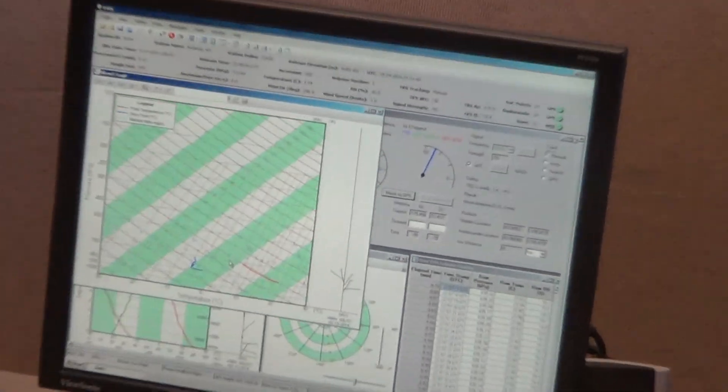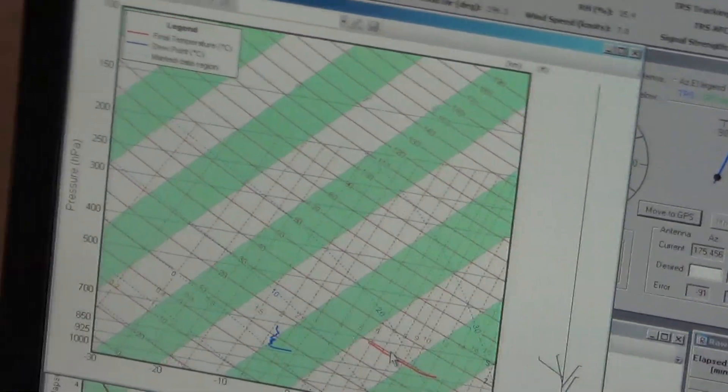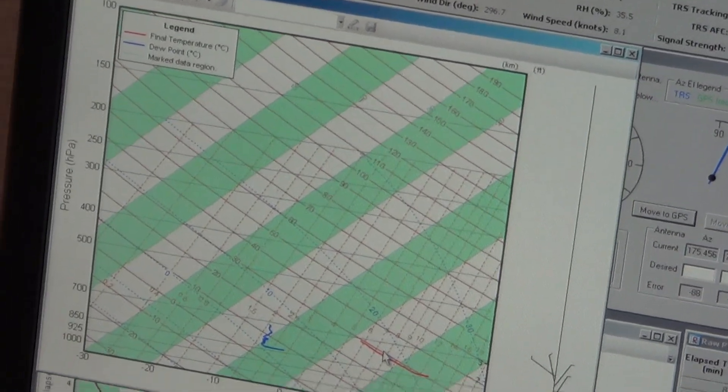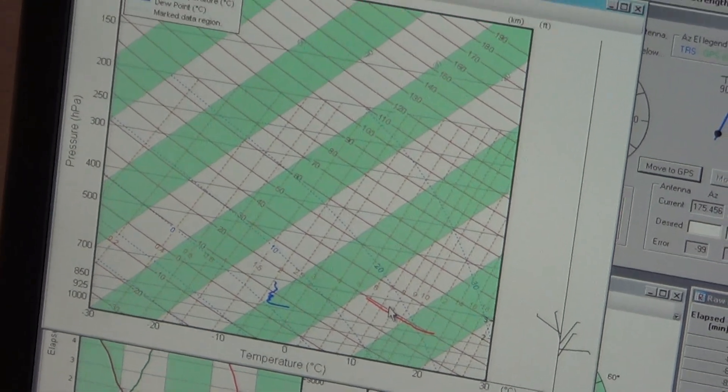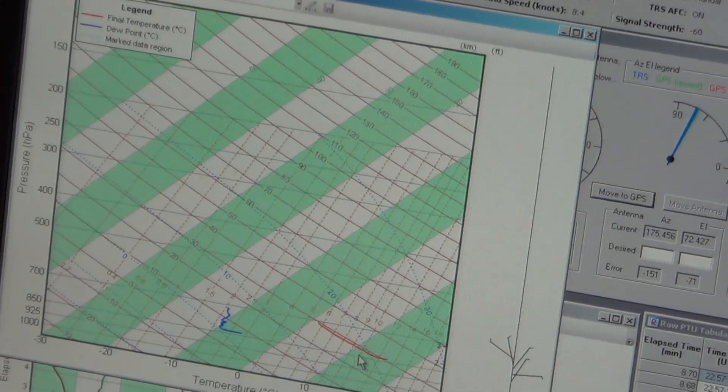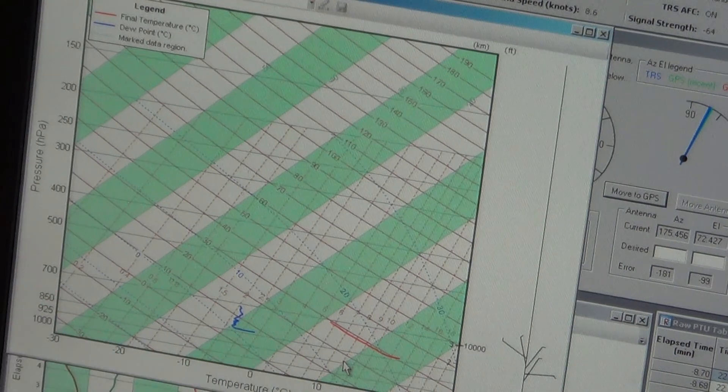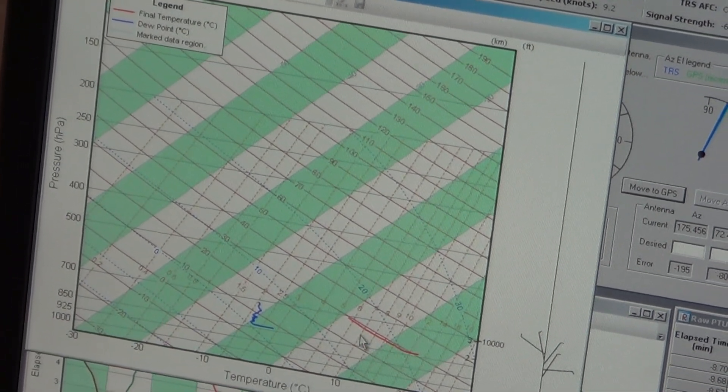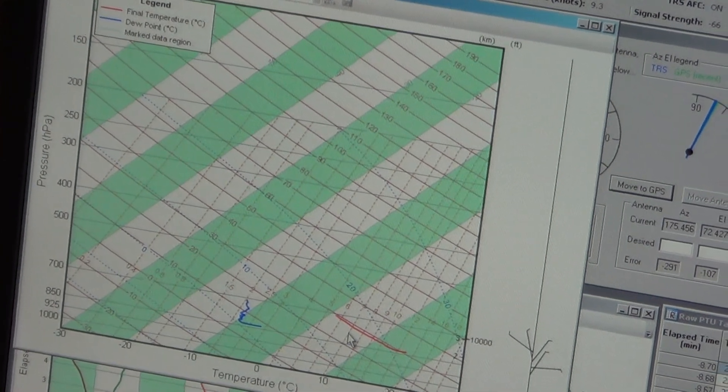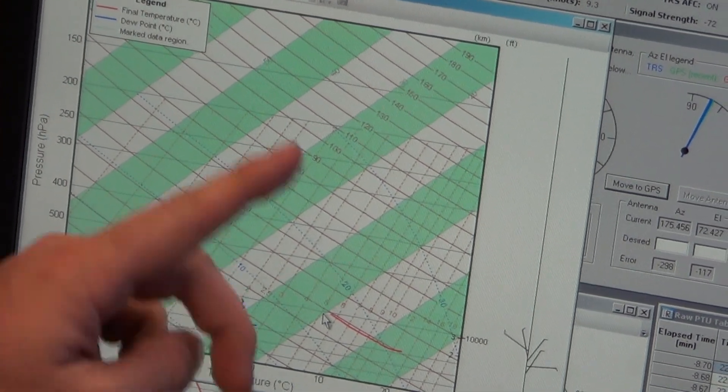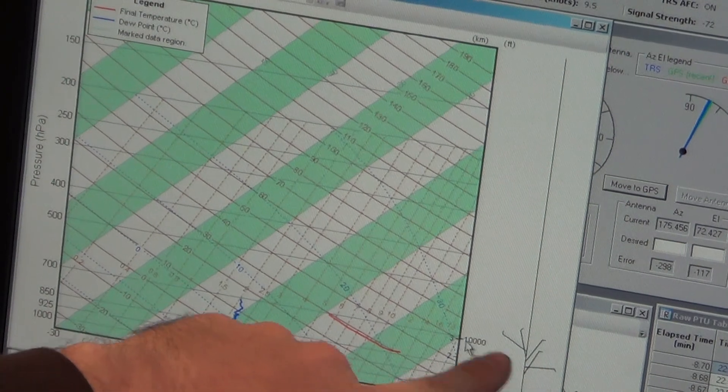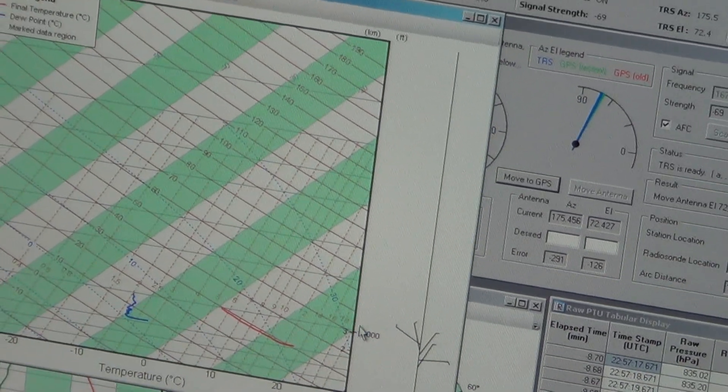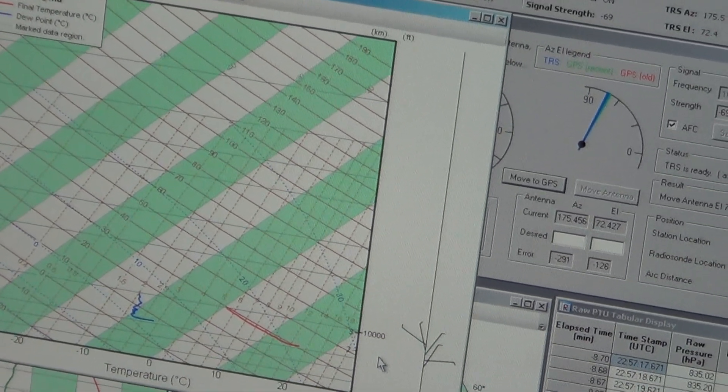This is your pretty standard, called a Skew-T Log-P. Every meteorologist learns about these in kindergarten. And basically what we have is the red line represents temperature. And this blue line here is dew point. As our radiosonde goes up higher in the atmosphere, we get this valuable data back. And then these little barbs over here are wind barbs. We can tell what the wind speed and direction is as it goes up.